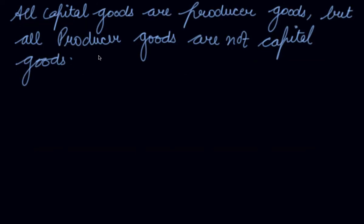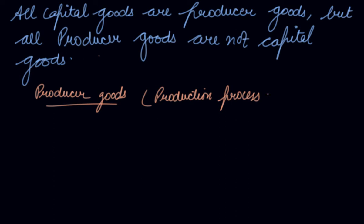The second most important thing to understand is all capital goods are producer goods, but all producer goods are not capital goods. What are producer goods? These are the goods that help in the production process in order to manufacture the final goods. All those goods which help in the production process are your producer goods.